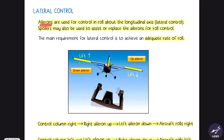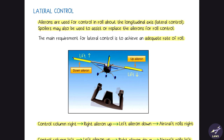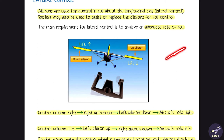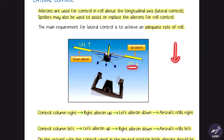Lateral control — ailerons are used along the lateral axis and about the longitudinal axis. Spoilers can also be used to replace ailerons for roll control. When you move the control column to the right, the right aileron moves up and the left aileron moves down. Since the right aileron moves up, airflow accelerates creating low pressure and a downward force, so lift reduces on the right side.